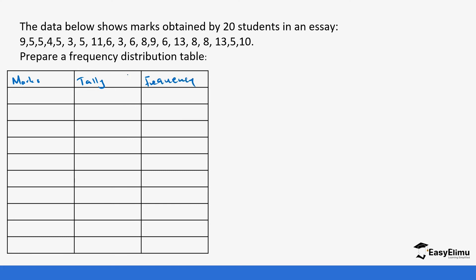The first thing you need to do is arrange your data in ascending order — from the smallest to the largest. You can do that, or you can use observation by checking the list. Looking at our numbers, three is the least, so we start with three. Three occurs two times, so the mark three occurs twice and the frequency is going to be two.